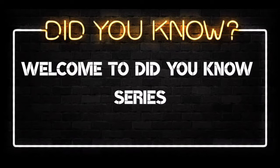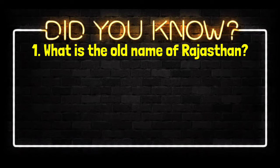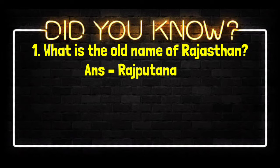Hello guys, welcome to the 'Did You Know' series. The first question of the series is: what is the old name of Rajasthan? The old name of Rajasthan is Rajputana. The correct answer to this question is Rajputana.